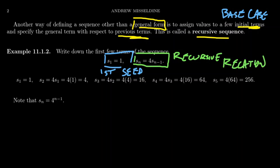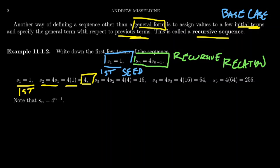The recursion tells us that the next term in the sequence is determined by the previous term. Sn, the next term, will be four times the previous term. So the first term is one. The second term, S2, is four times S1. S1 was one, so four times one is four. The second term is four, giving us the sequence so far: one, four.